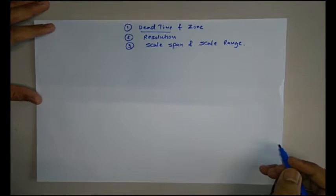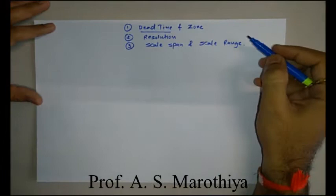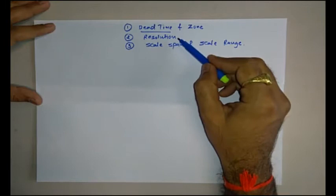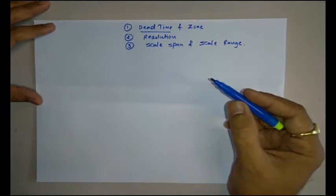Welcome back. In the last lecture we had a detailed discussion on the concept of sensitivity and loading effect. In this lecture we are going to finish the static characteristics of an instrument. Three parameters are left: first, the concept of dead time and dead zone; then resolution; and finally, scale span and scale range.